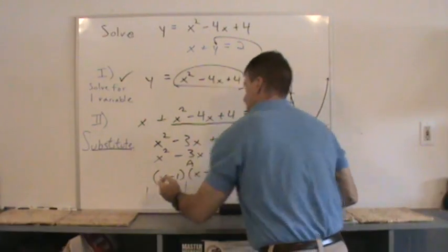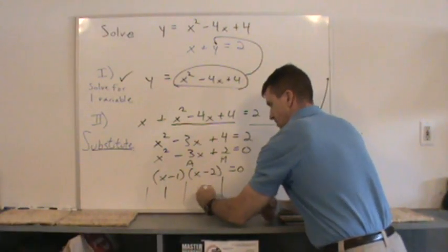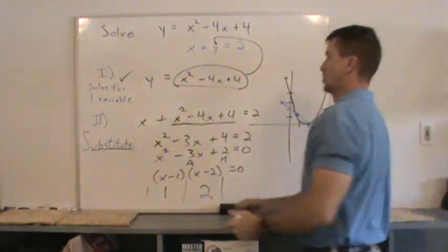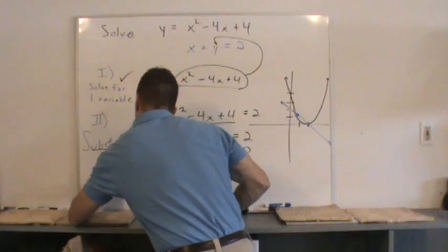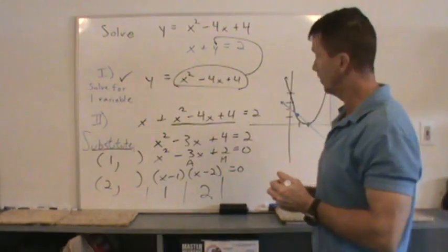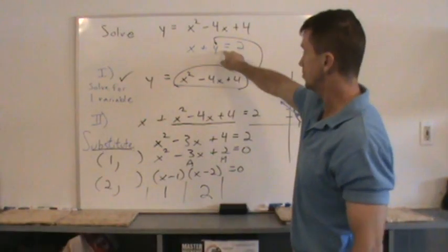And there we have it. x equals 1, x equals 2. So our solutions are at x equal to 1 and at x equal to 2. Now how do I find y? Go find something simple. You can use this one. That's fine. You can use this one if you want.